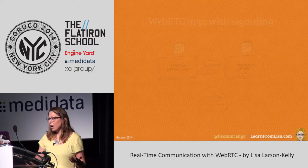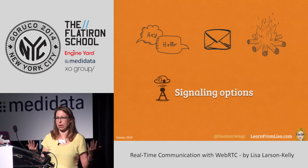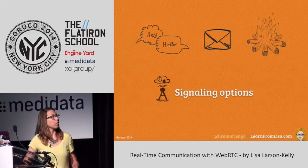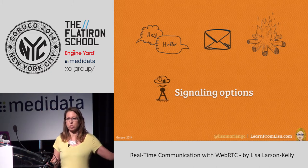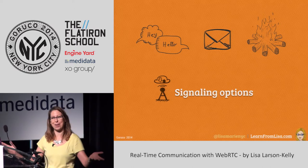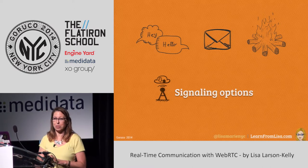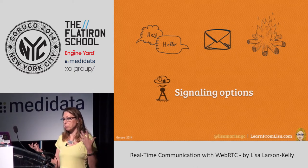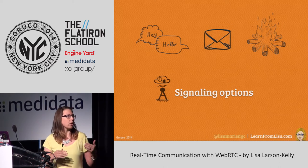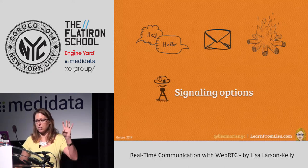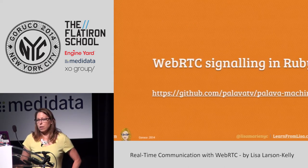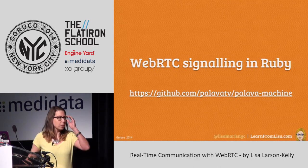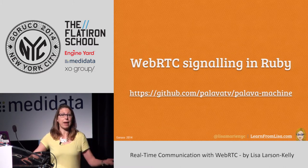For signaling, you can use anything — it is not specified in the WebRTC spec. You could send the connection information through chat, email, smoke signals — it doesn't matter. A lot of people will use WebSockets, or XMPP, or Google's Channel API. All sorts of different options for that initial signaling. There's even a Ruby signaling server using the Ruby Event Machine that's open source.